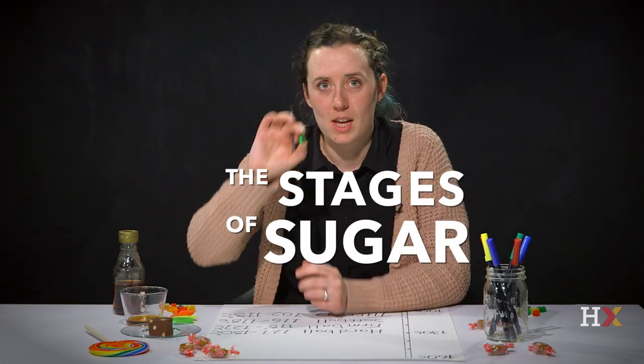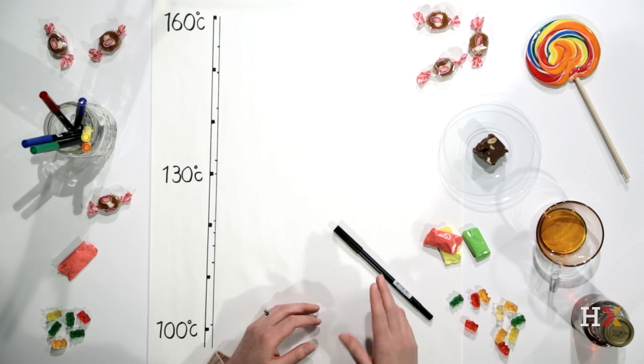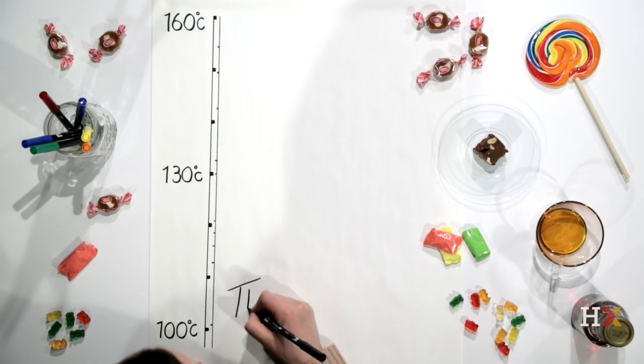If you take a pot of sugar and water and heat it, the sugar will pass through several stages as the water boils off. Here I'm going to illustrate each stage and its properties because these stages are useful for making candy.